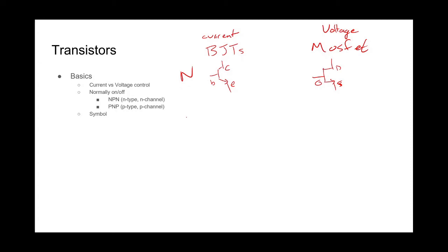For p-type, the symbol looks very similar except the arrow goes in, and we have the emitter at the top, collector at the bottom, and base in the middle. For p-channel MOSFETs, it flips around: source at the top, drain at the bottom, and gate on the side. The base or gate is our input — that's what controls the flow of electricity between the emitter and collector for BJTs, or between the drain and source for MOSFETs.